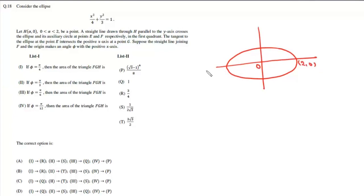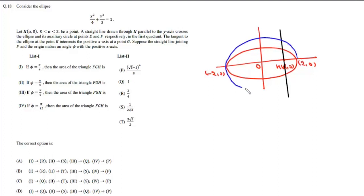On the ellipse, we have the origin, (2, 0), and (−2, 0) marked. There is a point H with coordinates (α, 0). A straight line drawn parallel to the y-axis crosses this ellipse and its auxiliary circle at points E and F respectively.